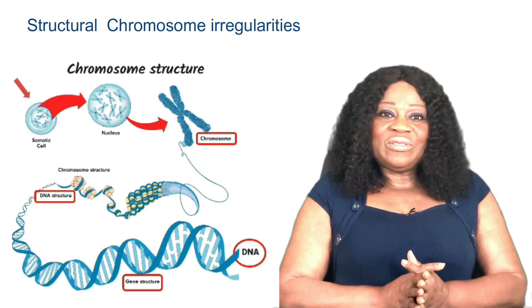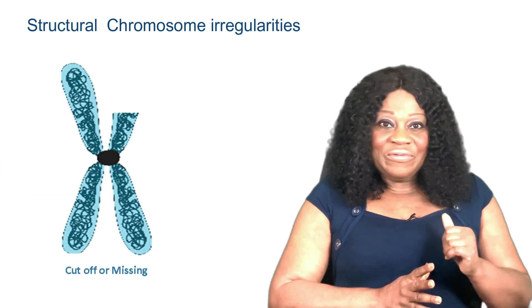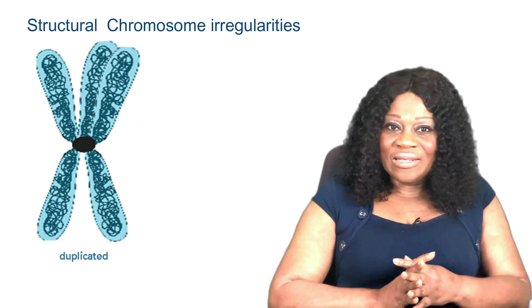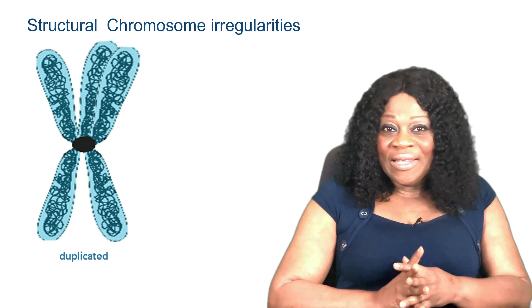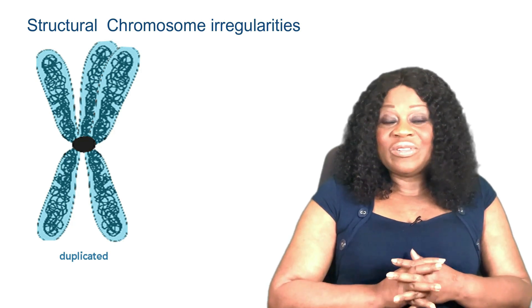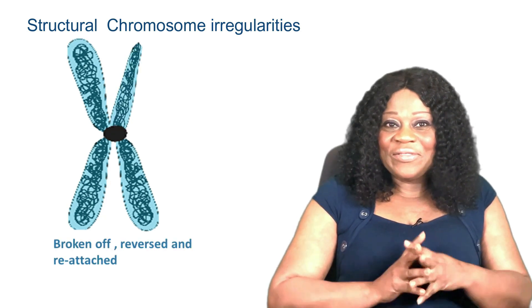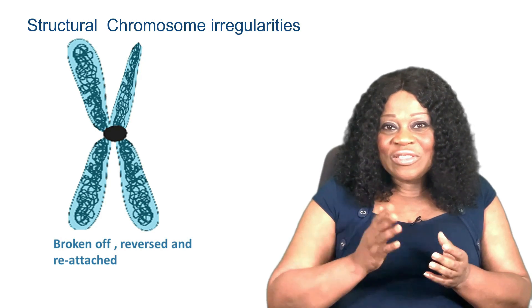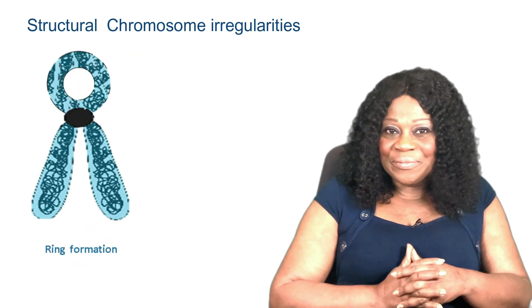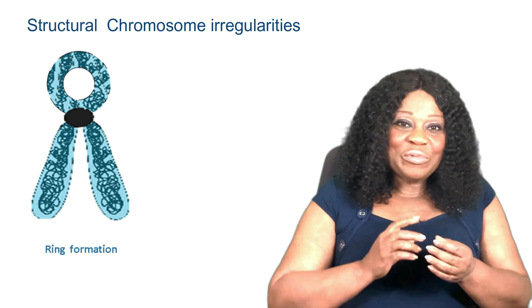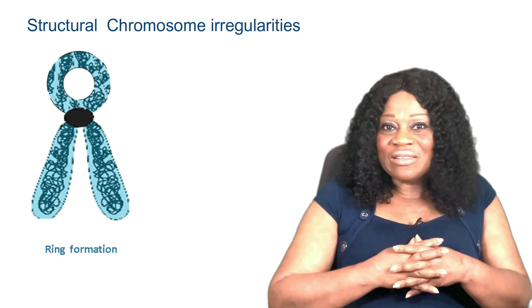Structural chromosomal abnormalities occur due to alterations in several ways. A portion of a chromosome could be missing, deleted, or duplicated, resulting in extra genetic material. A portion of one chromosome could be translocated or transferred to another chromosome. A portion of the chromosome could be broken off, turned upside down, and reattached, resulting in inverted genetic material. A portion of the chromosome could also be broken off and form a ring, and this could happen with or without loss of genetic material.